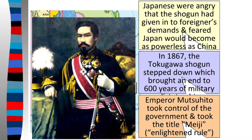By 1867, the Tokugawa Shogun actually stepped down, saying everyone hated him and he might as well give up. That ended 600 years of military dictatorship where the Shogun was in charge. The Japanese feudal class system was gone. Instead of a Shogun, the emperor — who had been quiet all these years — stepped up. The emperor at the time took on the title of Meiji, meaning 'enlightened one.'